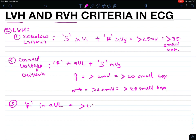The third criteria is R wave in AVL. If it is more than 1.2 mV or more than 12 small boxes, it suggests left ventricular hypertrophy. The most commonly used criteria is Sokolov criteria.